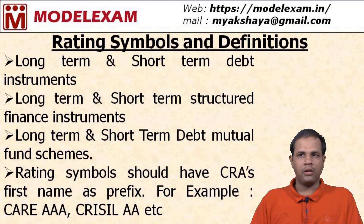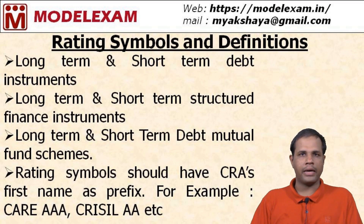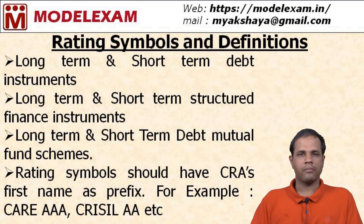Rating symbols should have the credit rating agency's name as a prefix. For example, it could be CARE AAA, CRISIL AA, etc. In the coming slides, we will see the different ratings.